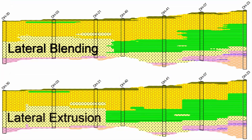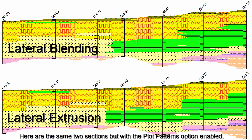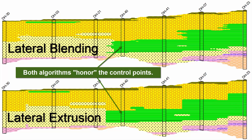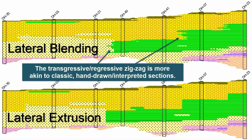Here are the same two sections, but with the Plot Patterns option in the previous menu enabled. So, which algorithm is better? Both algorithms honor the control points by matching the lithology adjacent to the boreholes, but the transgressive-regressive zigzag within the Lateral Blending is more akin to classic hand-drawn or interpreted sections.